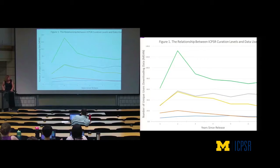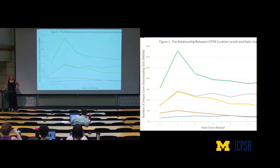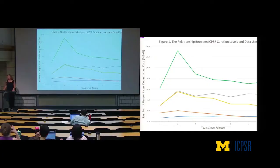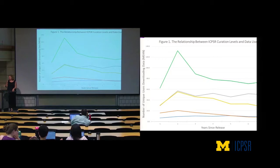Looking at the same curve by curation level: the blue line on the bottom is replication data — those get no love and care from ICPSR, people just self-publish them, most are just in support of a journal article, and they get the lowest use over the seven-year period. The green line is sponsored projects that are highly intensively curated, and that's the highest line, as we'd expect. As hypothesized, the data we take more care of and curate to a higher standard get more use.